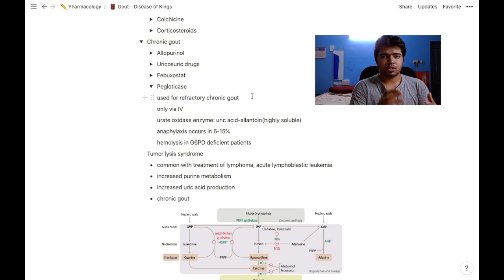Febuxostat is a non-purine xanthine oxidase inhibitor. Pegloticase is used for refractory chronic gout when all other drugs do not help. At that time, only pegloticase is used, and it is only administered via IV.